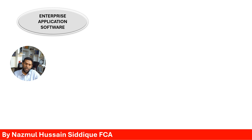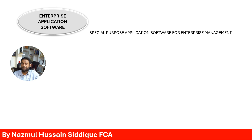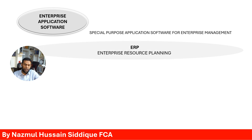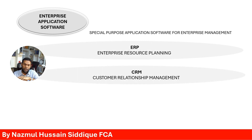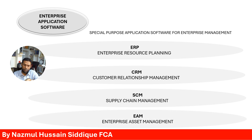Next we shall discuss enterprise application software. These are application software specifically developed to perform enterprise-related activities — essentially special-purpose application software for enterprise management. Examples include ERP (enterprise resource planning), CRM (customer relationship management), SCM (supply chain management), and EAM (enterprise asset management) systems.